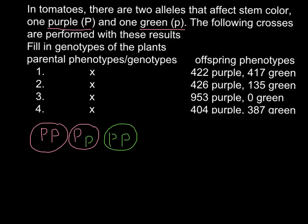In order to solve this problem, first we have to find the ratios. So here we have a 1 to 1 ratio, here we have a 3 to 1 ratio, here we have 1 to 0, and the last one is 1 to 1. The numbers are not exactly the same but very close, so we round them to the nearest ratio.